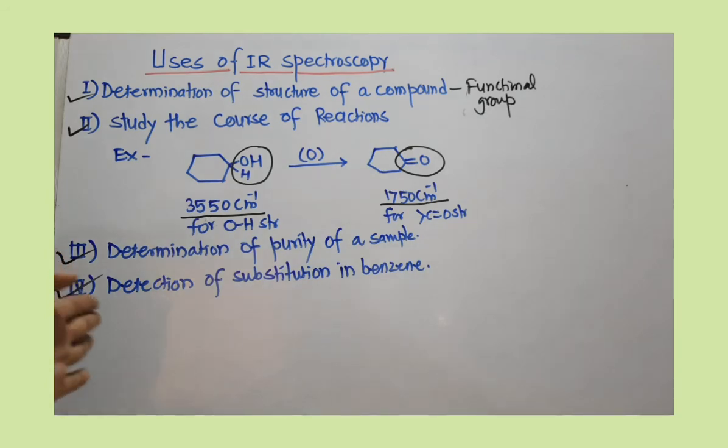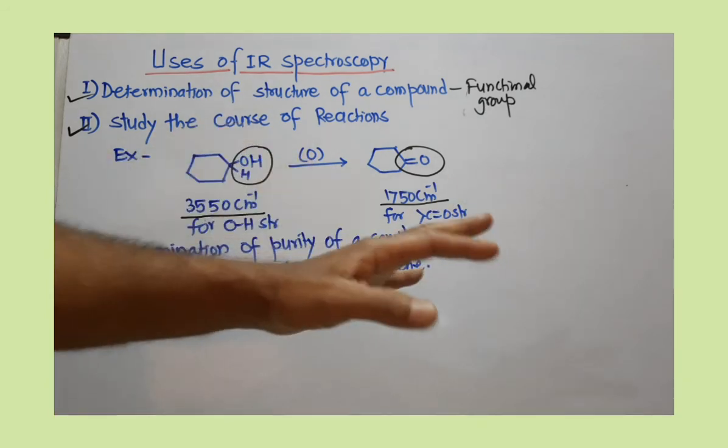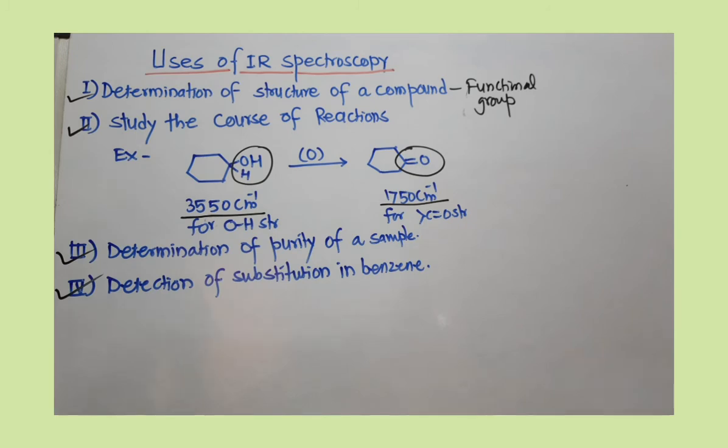You get a very different spectrum, particularly in the fingerprint region for all these ortho, meta, and para isomers. You can easily predict whether the spectrum is for ortho, meta, or para substitution.